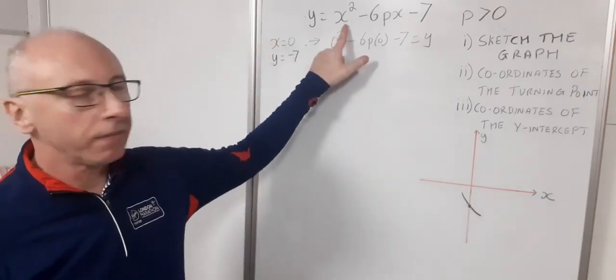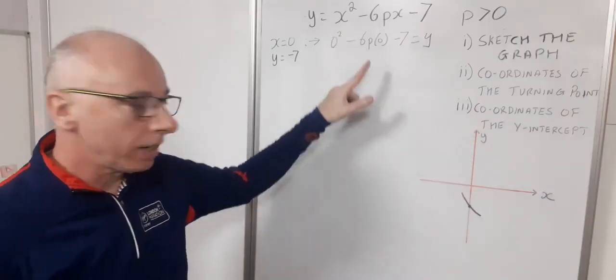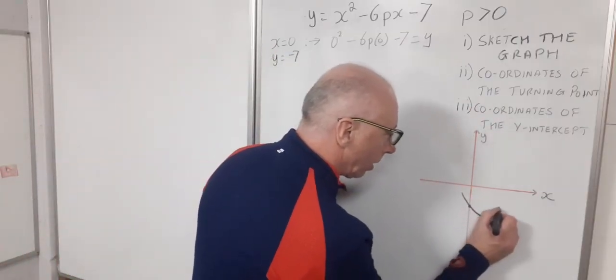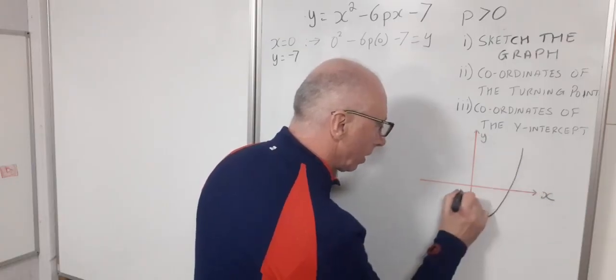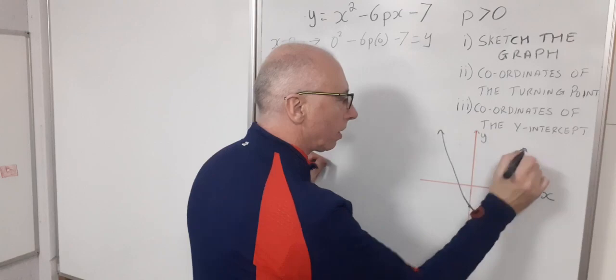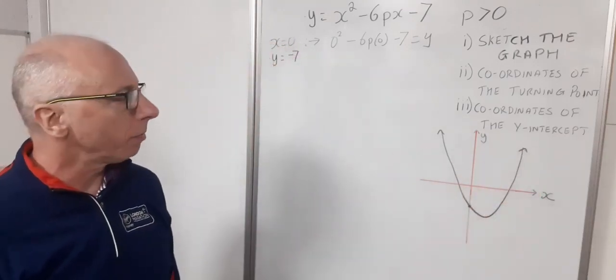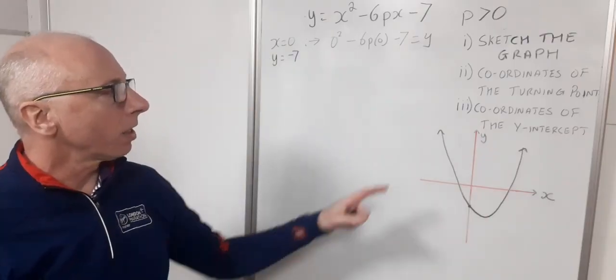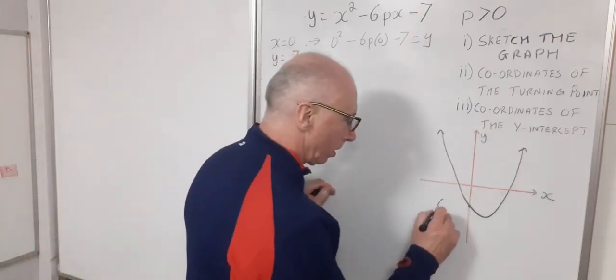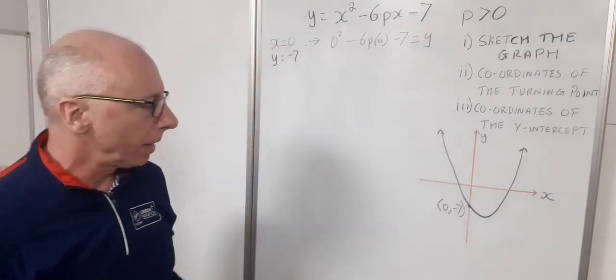We also see that the a-value is positive 1. So it's going to be cup-shaped. So it's going to be like this. So the quadratic could take a shape a bit similar to this, where it goes off to infinity in each side of the x-axis, the positive and minus axis. So that's the coordinates of the y-intercept. So it's at 0, minus 7. So that's our bit there.